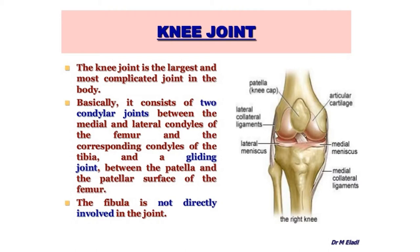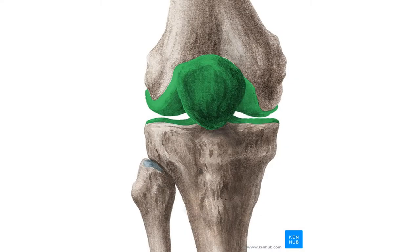The knee joint consists of a bicondylar type of joint. This joint is formed between the lower end of the femur and upper end of the tibia. The lower end of the femur has two convex condyles, whereas the upper end of the tibia has two flat surfaces called the tibial plateau — medial condyle of the tibia, lateral condyle of the tibia, lateral condyle of the femur, and medial condyle of the femur.